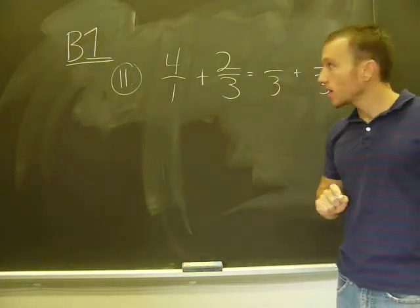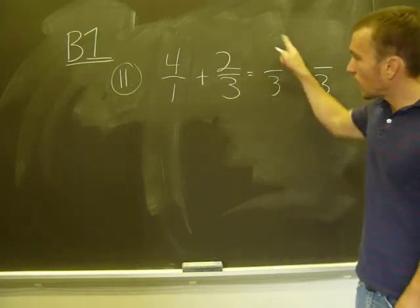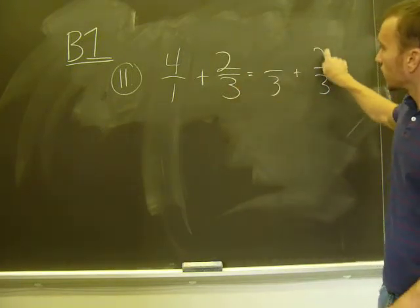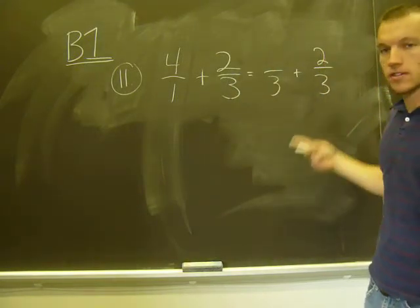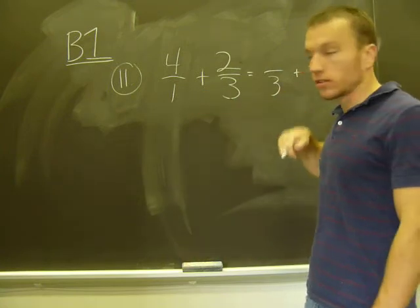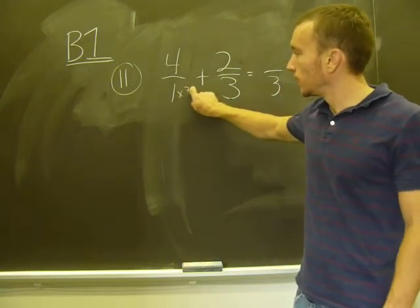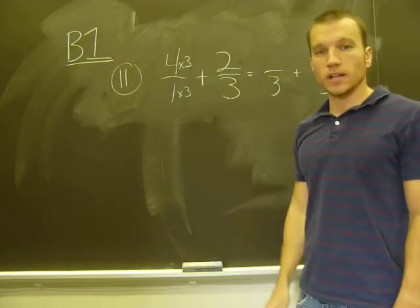So I follow that same process. So I now have to figure out what goes here. This is still going to be two because I didn't change that denominator. So two-thirds is two-thirds. All I need to do is figure out how I got from one to three. Right? I multiply it by three. So I have to do the same to the numerator times three.